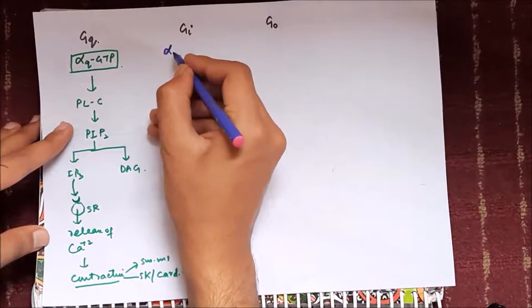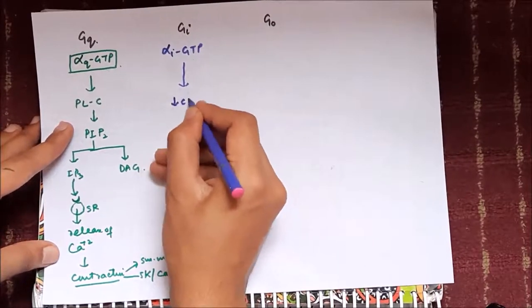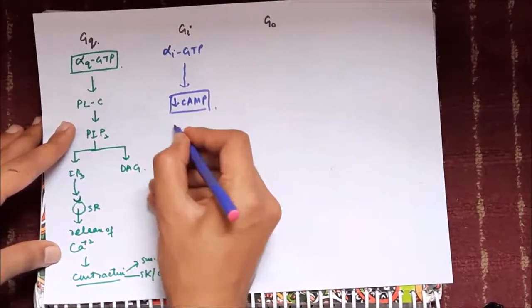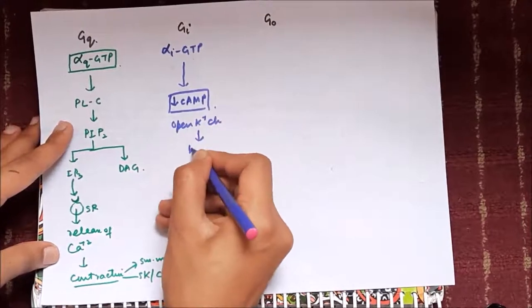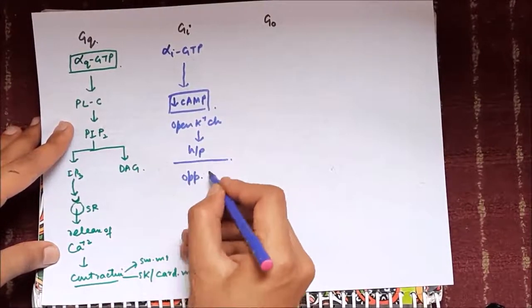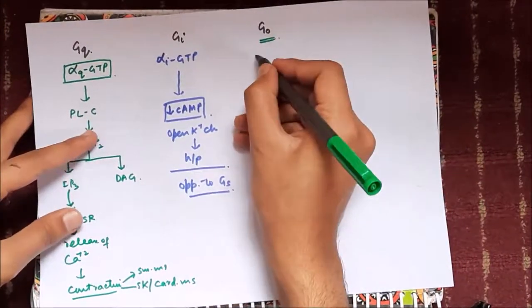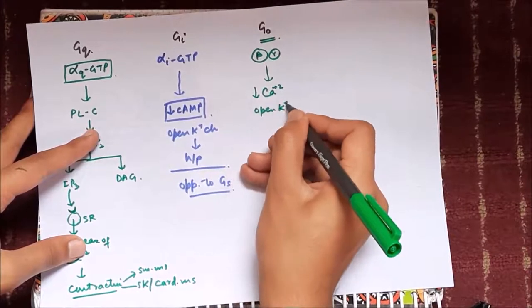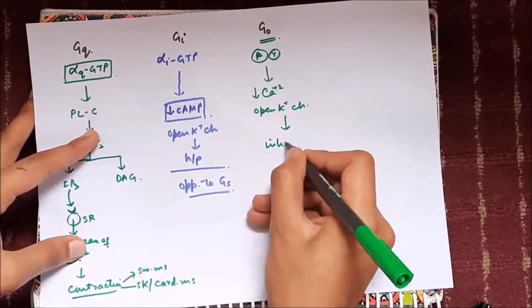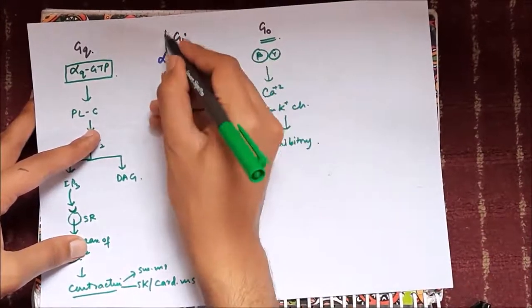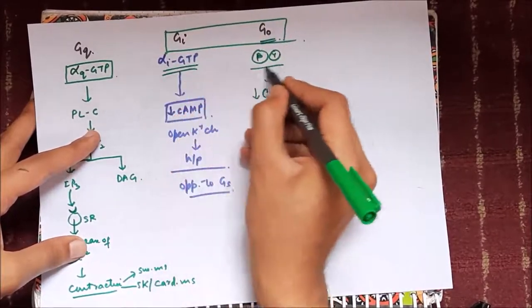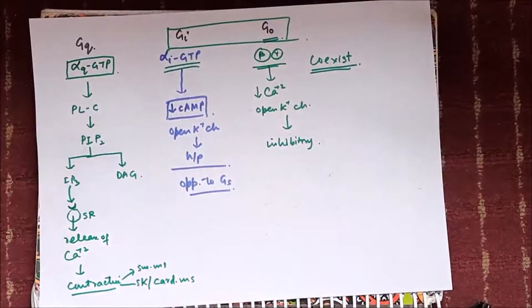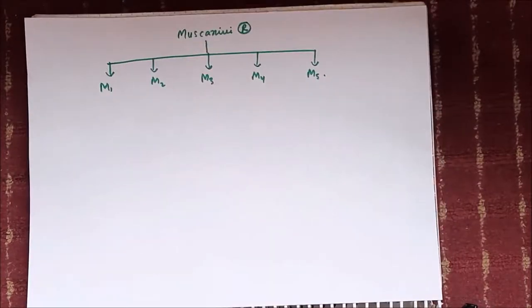The GI subtype is characterized by alpha-I-GTP, which causes a decrease in cyclic AMP levels and opens potassium channels, causing hyperpolarization — effects opposite to GS. The GO subtype effect is due to beta and gamma subunits, also causing decreased calcium levels, opening potassium channels, and hyperpolarization. These GI and GO effects coexist, so most often we use the term GI/O.